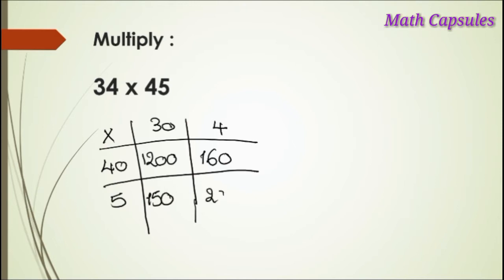Now we are done with the numbers. The last step is we add all these numbers together to get the final answer. So the sum of 1200 plus 160 plus 150 plus 20.